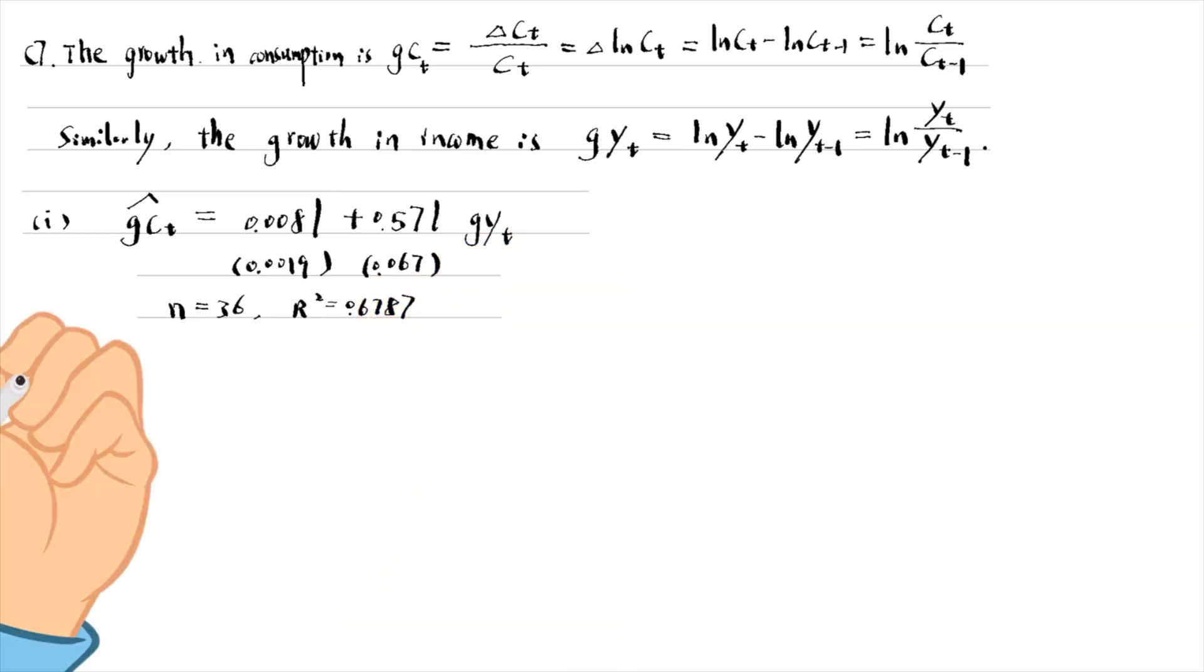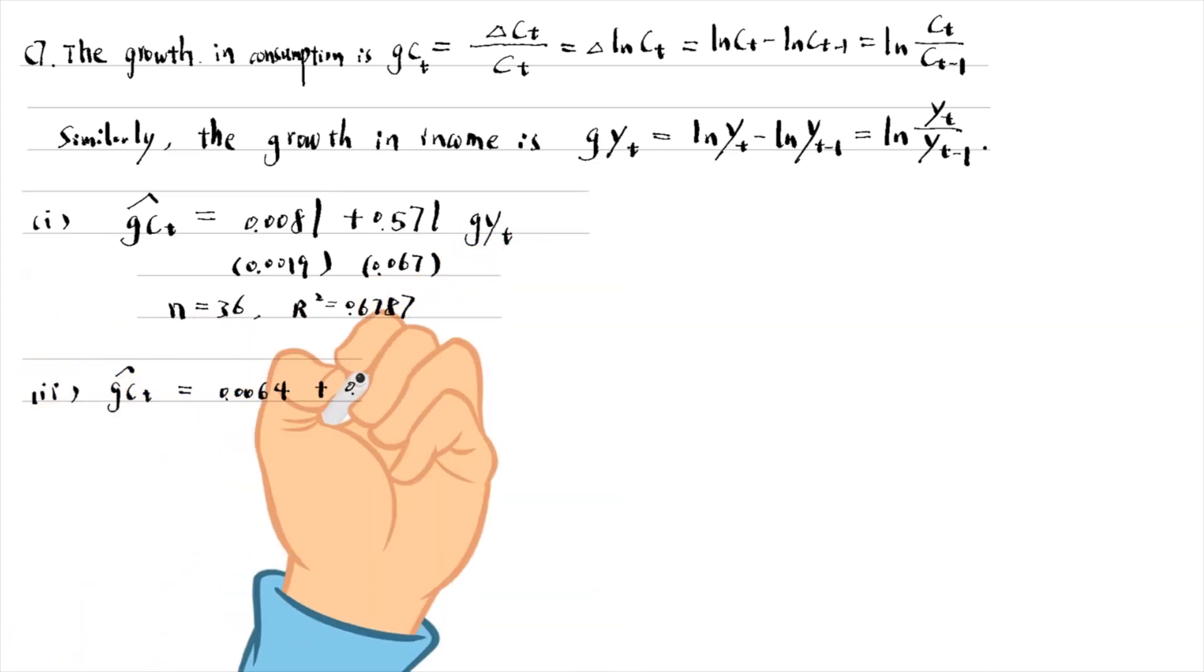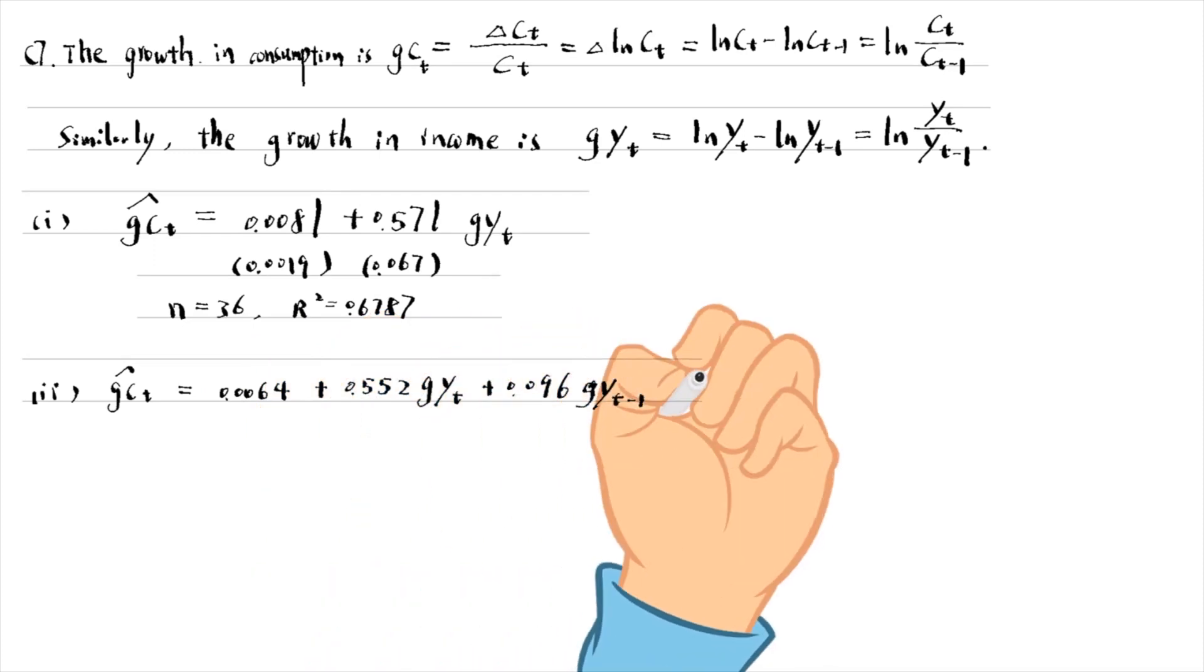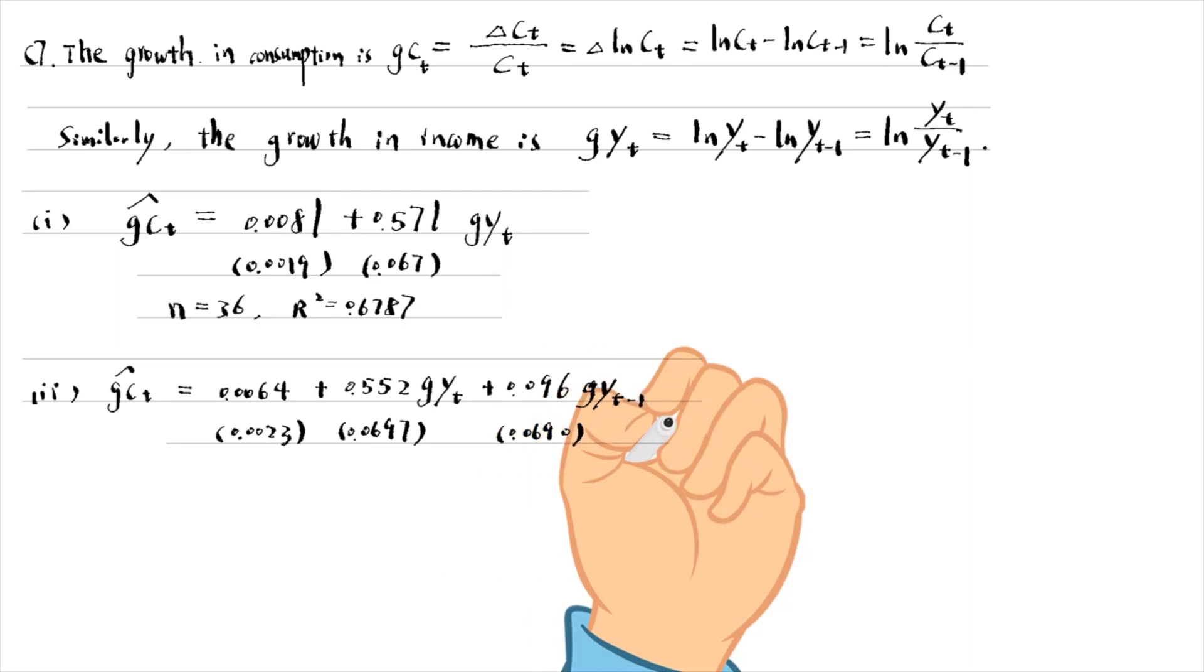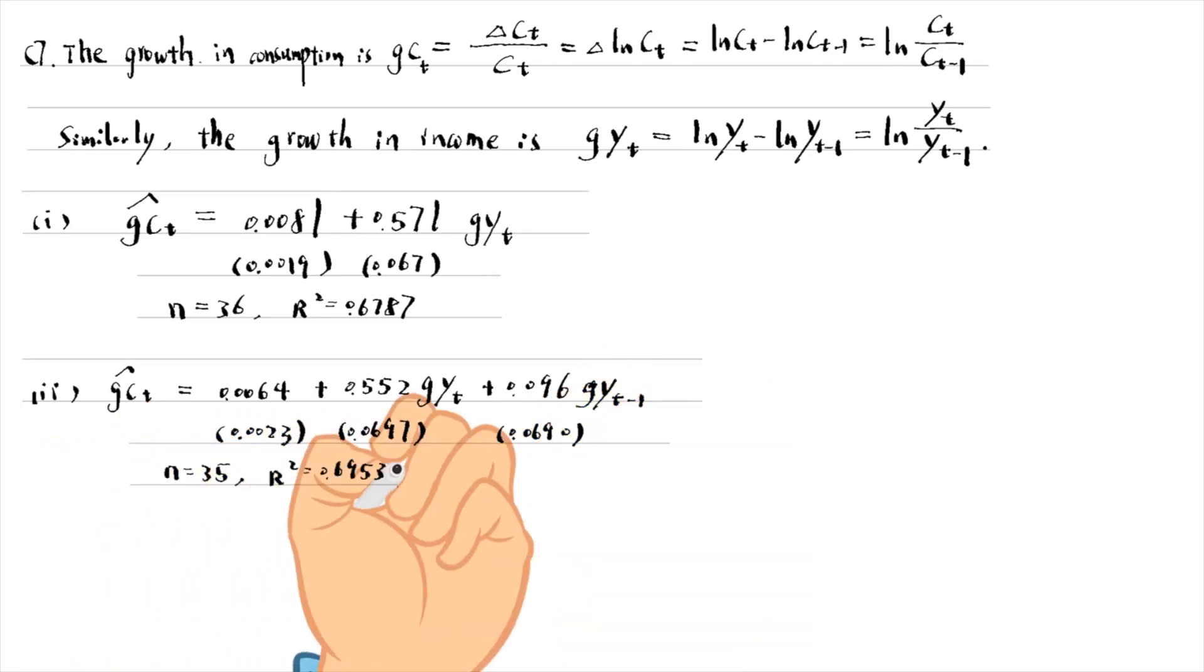We add the lag of income growth to the model in part 2. The estimate implies that a 10 percentage points increase in income growth in the last time period only raises the consumption growth by 1 percentage point in the current time period. The effect is not statistically different from 0 at the 10% level with a t statistic of 1.39.